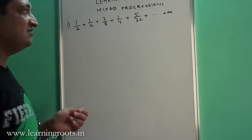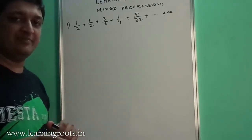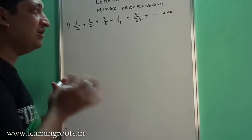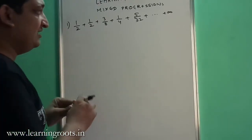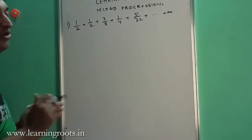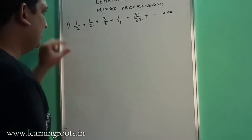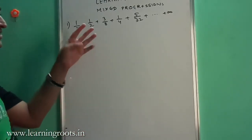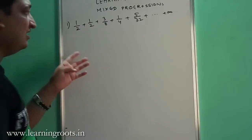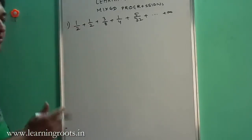What happens when there are certain progressions which are a combination of arithmetic and geometric progressions, or they have some common logic which is being repeated in that entire series? So how to go about solving these kinds of questions? These are special type of problems which involve some concepts from AP and GP, especially infinite GP, and this is how we will solve it.